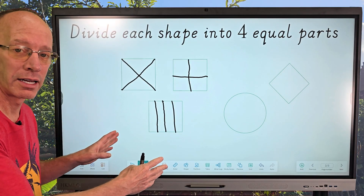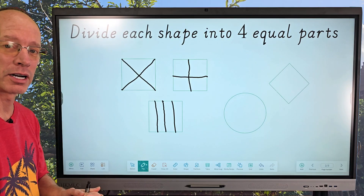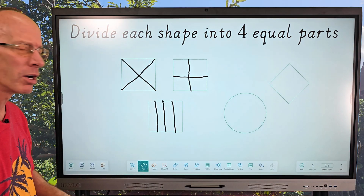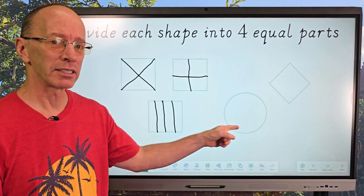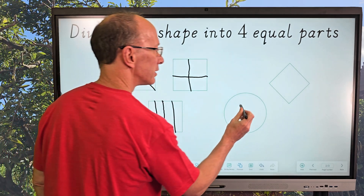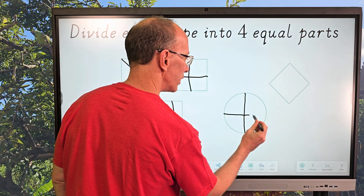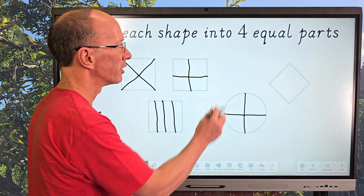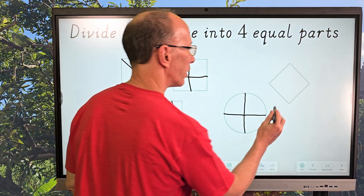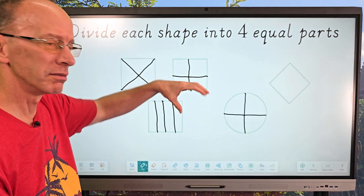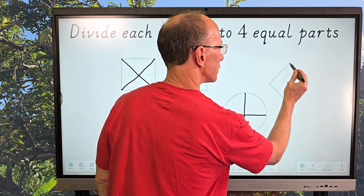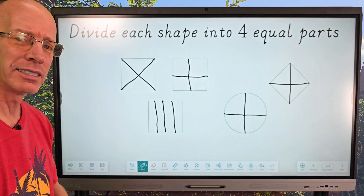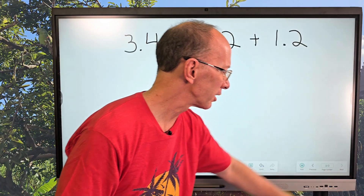If you had a square cake and four people coming over and you want to share it, you want to make sure you cut it into equal parts — these are different ways you can cut that cake. Now, if that's a pizza, just take a line straight down like this, another line over here, and now you've got four equal parts of that pizza. Oh, I'm getting hungry! Let's divide our last shape into four equal parts — I'll just draw a horizontal line right there.